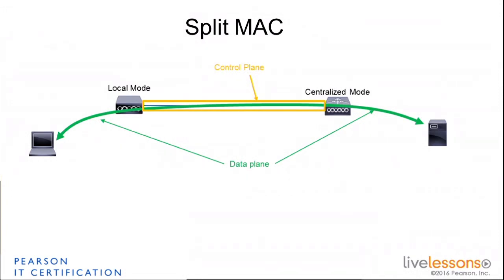But then also, the client traffic is going to get to the access point, is going to be encrypted maybe, or maybe not, but in all cases it's going to be encapsulated by the access point into another protocol, and then it's going to be sent as-is to the controller, and then the controller is going to release this traffic into the wired network. So you have that difference between control plane traffic between the AP and the controller, and data plane traffic between the AP and the controller.